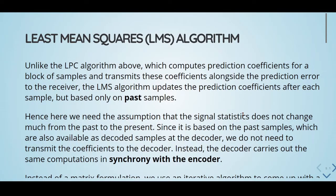Unlike the LPC algorithm, which computes prediction coefficients for a block of samples and transmits these coefficients alongside the prediction error to the receiver, the least-mean-squares algorithm updates the prediction coefficients after each sample based only on past samples.